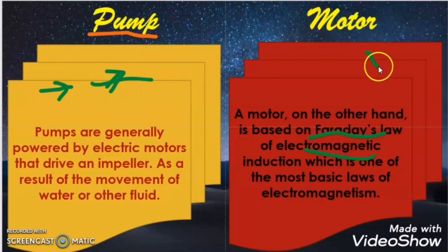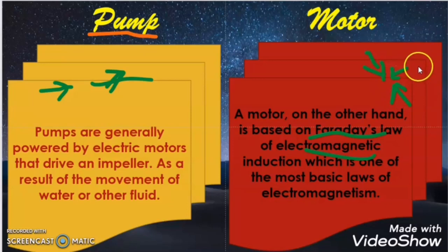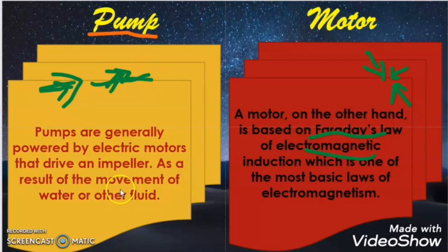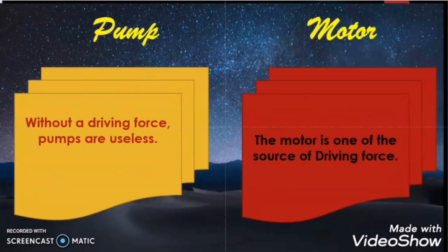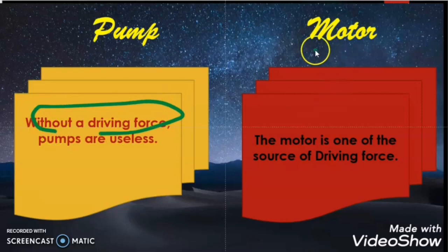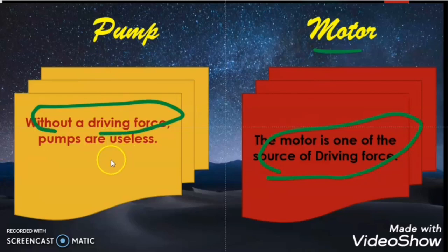The motor takes electrical energy and converts it to mechanical energy using the principle of Faraday's law of electromagnetic induction. But the pump takes mechanical energy from the prime mover and converts it into the movement of fluid — that is, hydraulic energy. Now another difference is that the pump is nothing without a driving force, and the motor is one of the sources of that driving force. So the pump is useless without a driving force, but the motor is the source of the driving force.